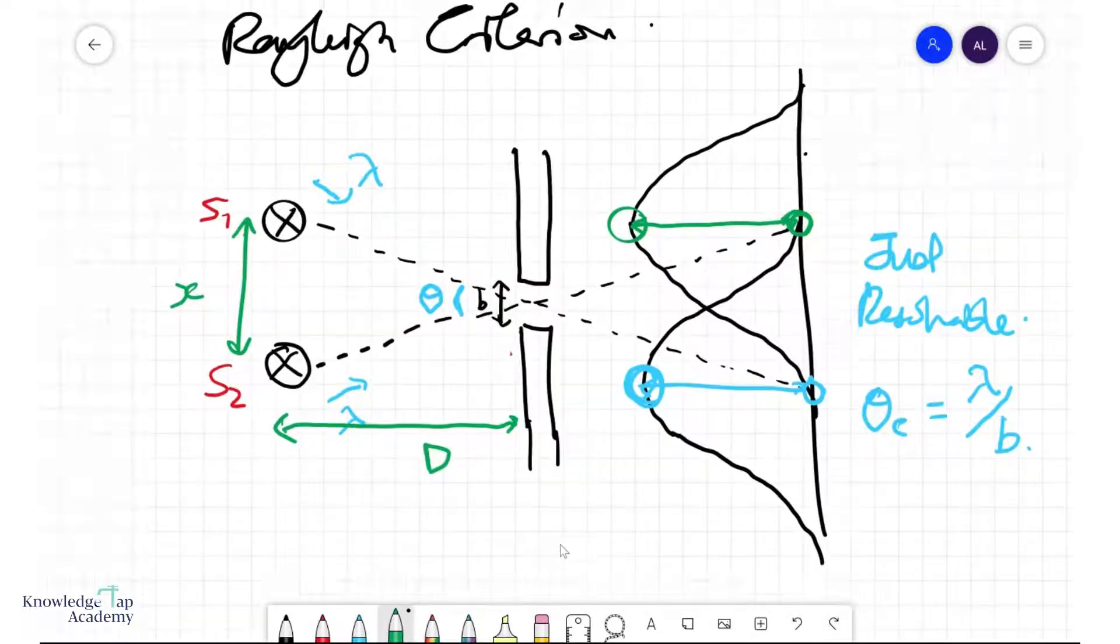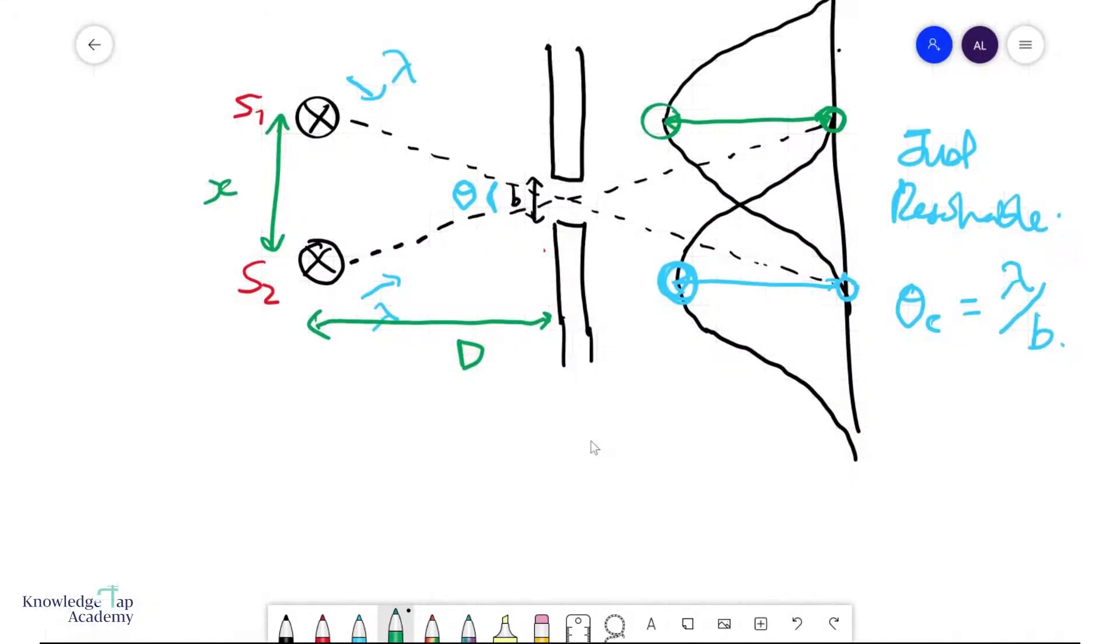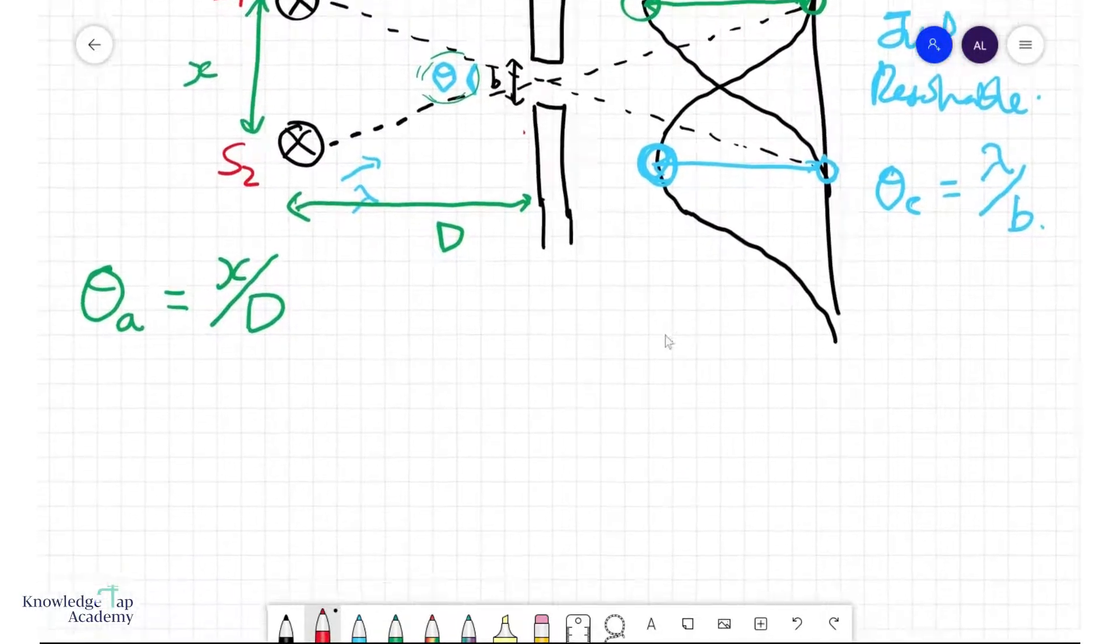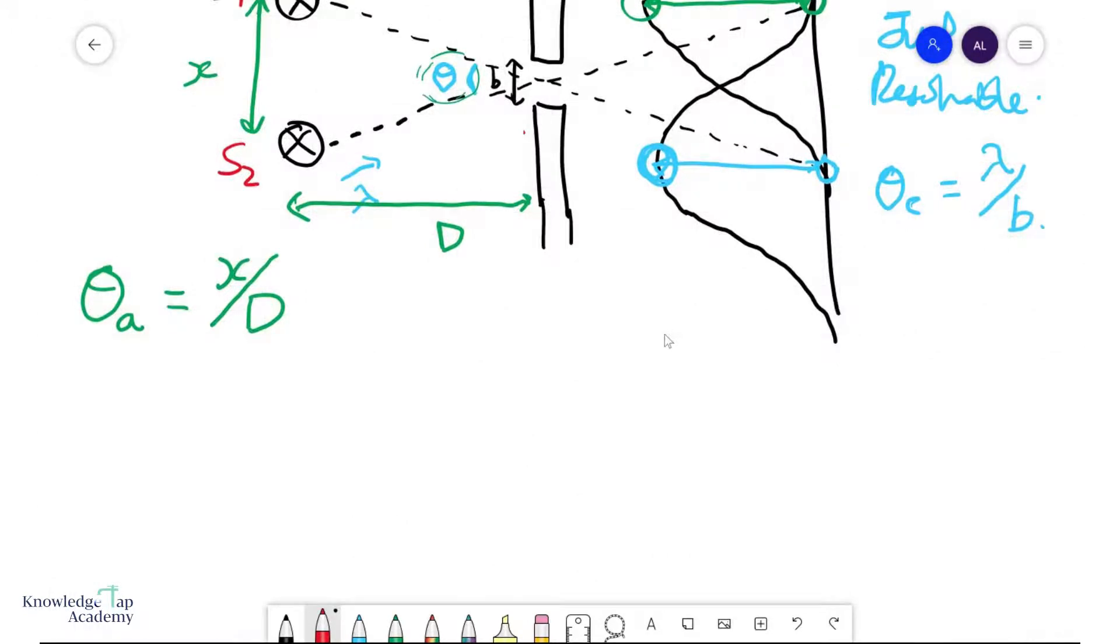Now based on x and d as we have written over here, we can calculate another angle here which we will call theta actual, which trigonometrically speaking is approximated as x over d, because theta is usually going to be quite small.